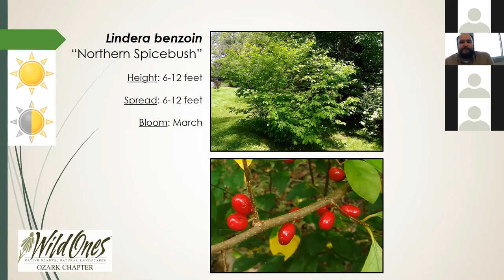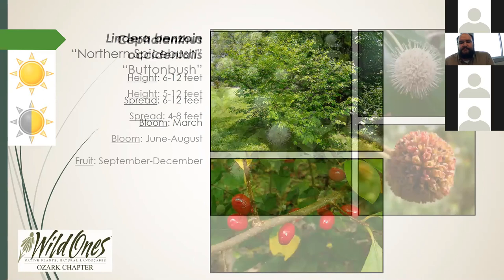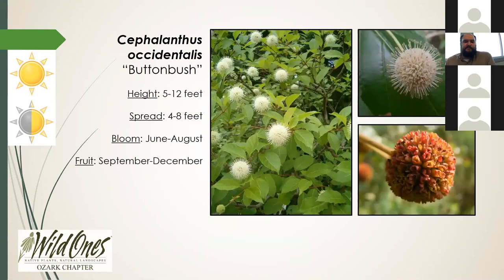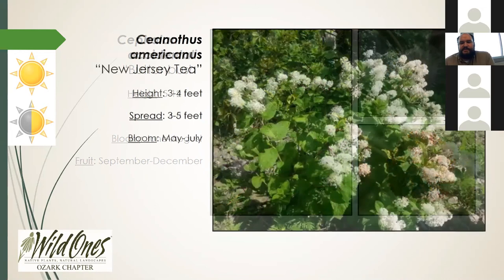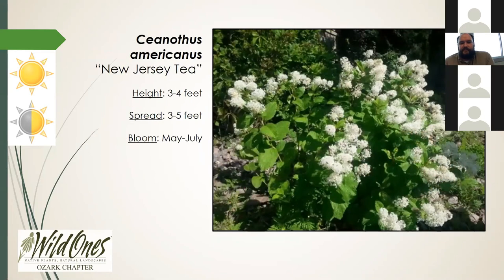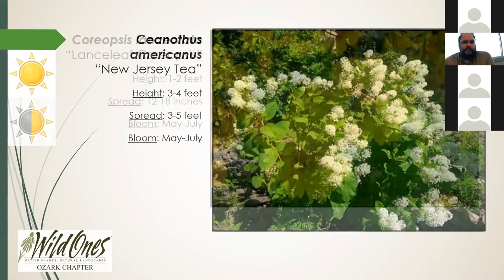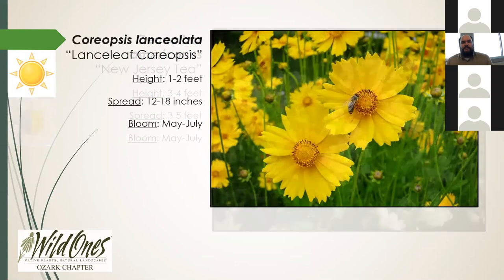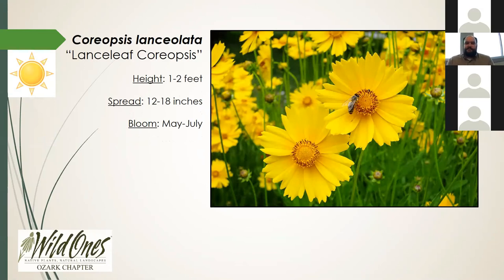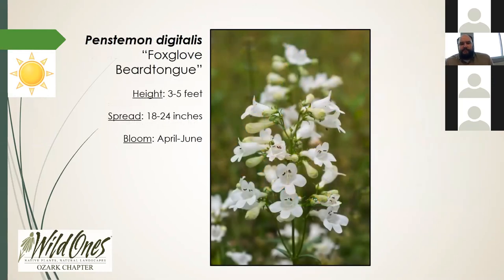Buttonbush likes wet feet, blooms June through August, and produces fruit in September through December — or even as early as August in our region. New Jersey tea blooms early summer to late spring, likes full sun to part shade, and is great for pollinators. Lance-leaf coreopsis is a yellow flower that likes full sun and blooms May through July, getting about one to two feet high. Foxglove beardtongue — Penstemon digitalis — one of our native penstemons, blooms April through June and has a false stamen inside the flower with little hairs on it, which is where it gets the name beardtongue.